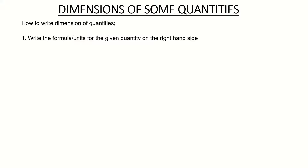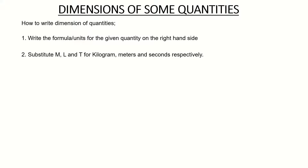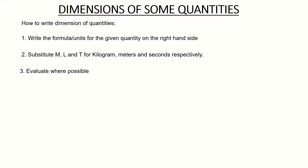Most times you are given a quantity — for example, you are asked to find the dimension of speed. The first thing you do is either write down the units for speed or write down the formula for speed on the right-hand side. Step 2: substitute capital M, capital L, and capital T for kilograms, meters, and seconds respectively. That means where you see kilograms you place capital M, where you see meters you place capital L, and where you see seconds you place capital T.